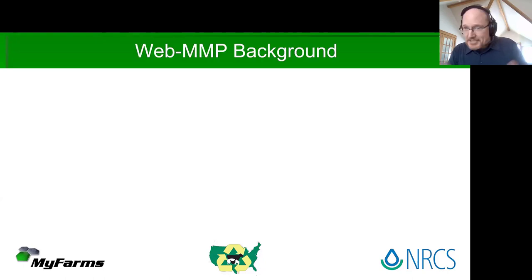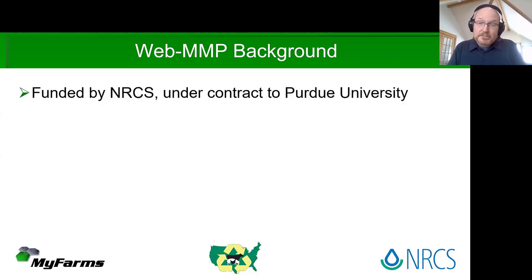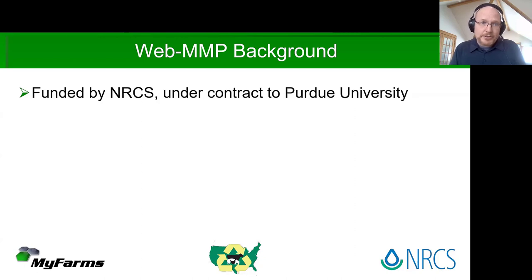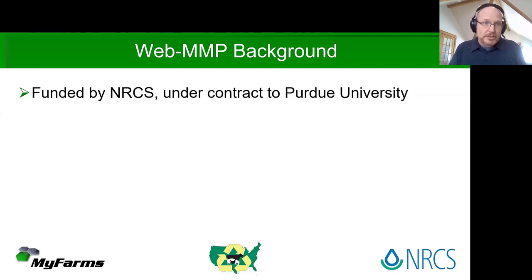The manure management planner software was developed by Purdue University since 1996. More recently, Purdue has engaged MyFarms to cultivate that code base, and we've been asked to webify manure management planner — bring it to the cloud where anybody can access it at any time and realize rapid iterative improvements in the way the logic works.